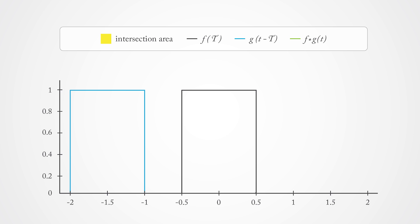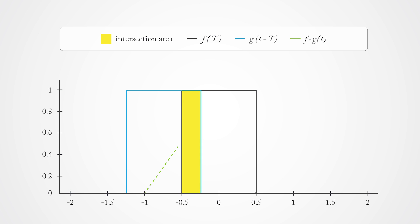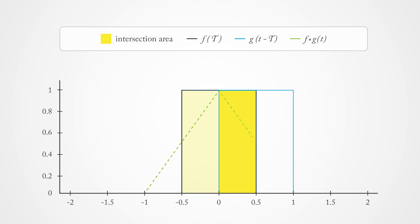The computation of the convolution means that we start to push this box over the other one, and at every point in time, we take a look at the intersection between the two signals. At first, they don't touch at all. Then, as they start to overlap, we have highlighted the intersected area with green, and as they get closer to each other, this area increases. When they are completely overlapped, we get the maximum intersection area, which then starts to dwindle as they separate.